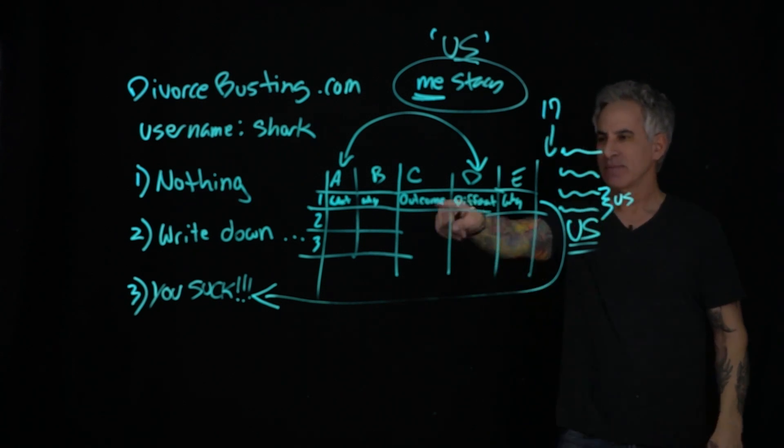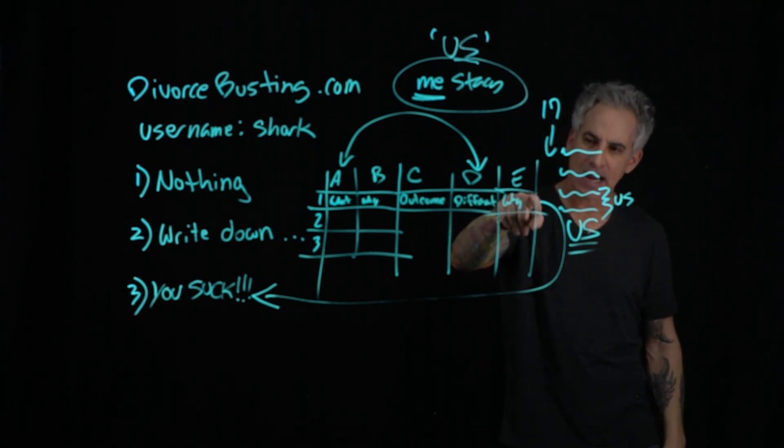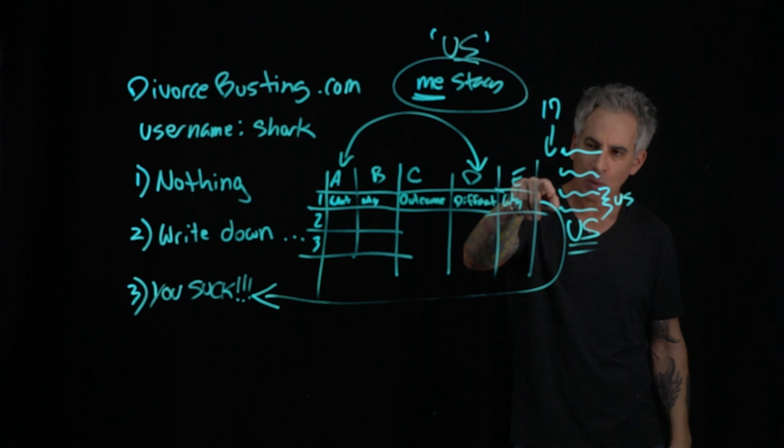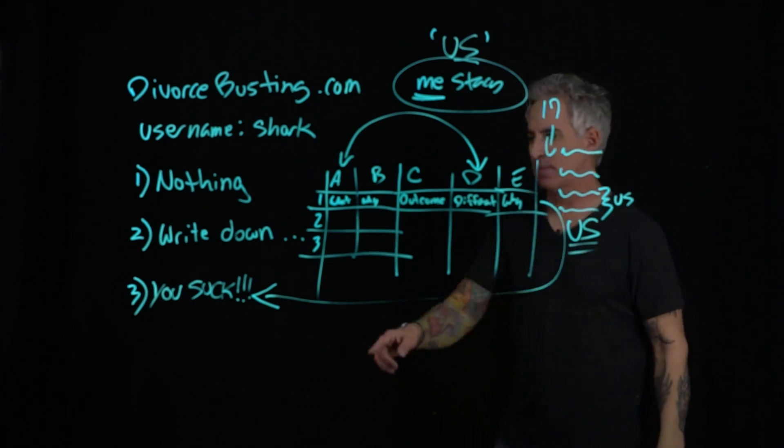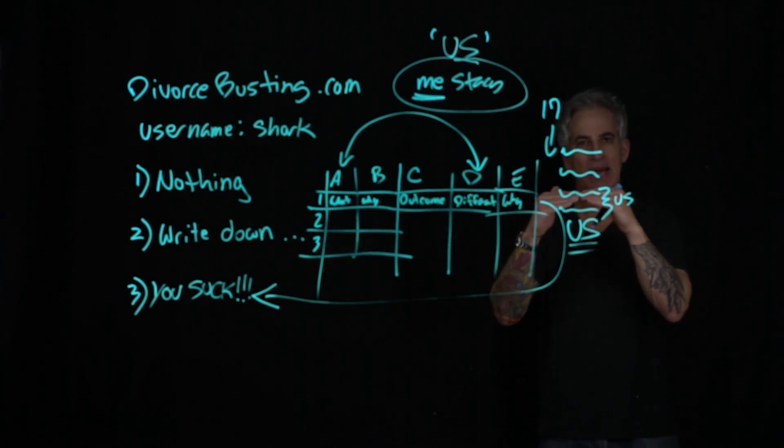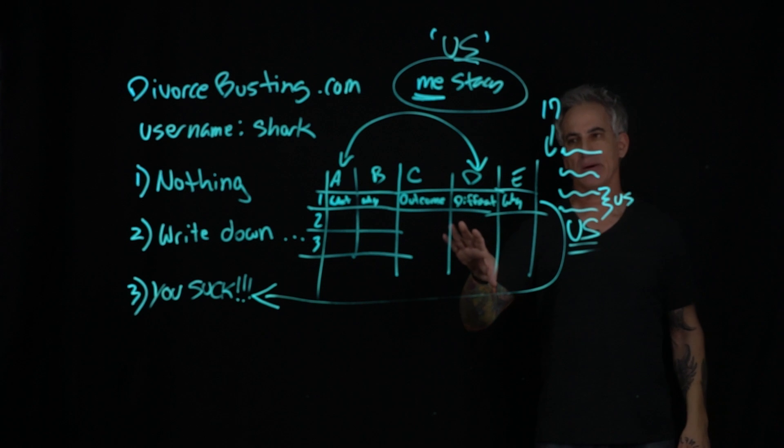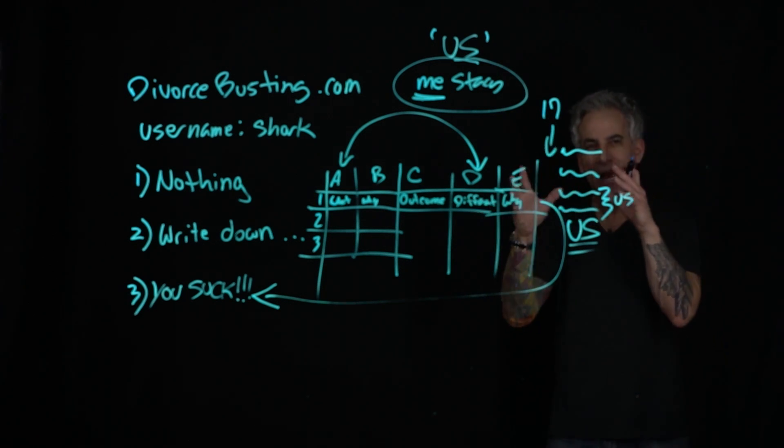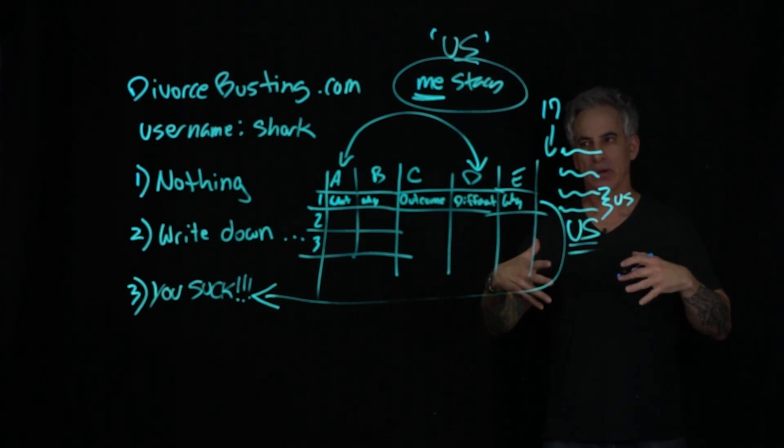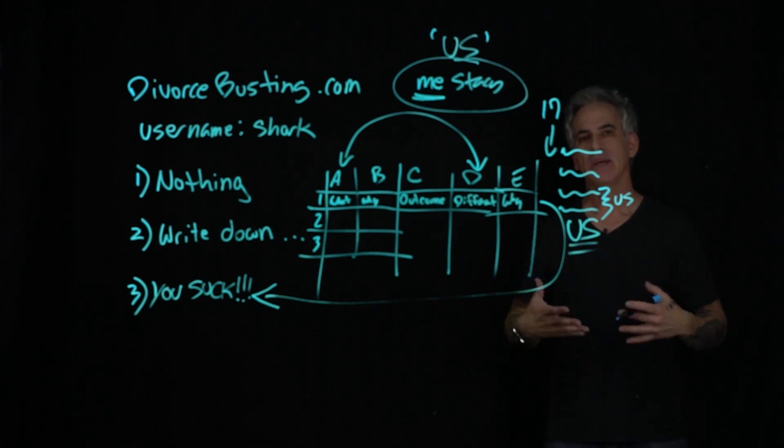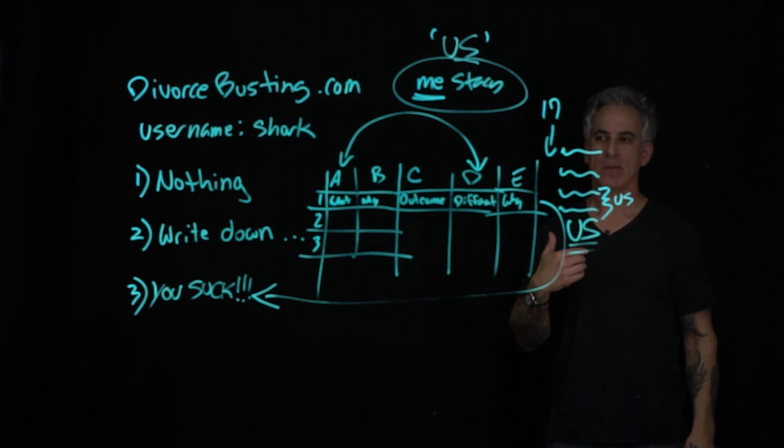Write down what you did, write down why, what was the outcome, what would you like to do differently, and ask yourself, ask your inner child, ask your inner self why you did not do that. When you connect why you didn't do it to you suck, when you make that connection, doing nothing and standing by your marriage will become so galactically easy it's not even funny. Because you will surrender to there's nothing that I can do now.